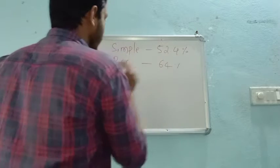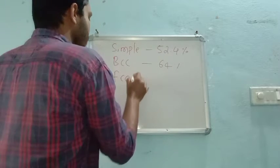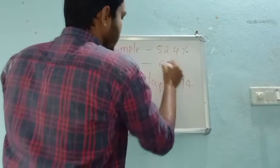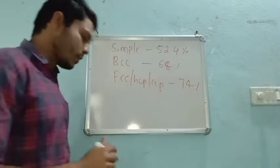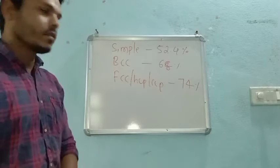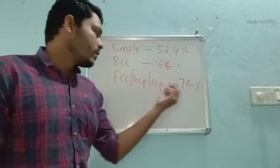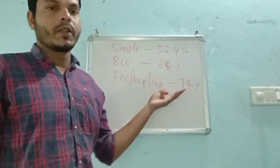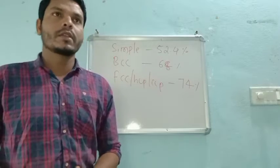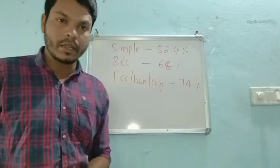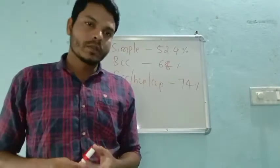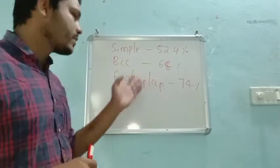nearly 64%. In FCC, HCP, or CCP it is 68%. So FCC, HCP, and CCP are more packed compared to simple as well as BCC. In simple words, as the packing efficiency percent increases, the stability increases — that solid will be more and more stable.